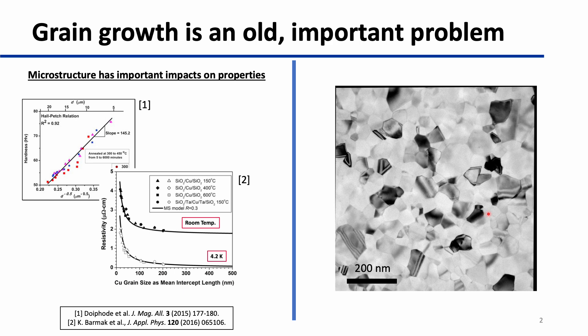Today I'm going to be talking about correlative electron microscopy for in-situ studies of grain growth in thin films. The vast majority of useful engineering materials in the world are polycrystalline in nature, meaning they're made up of many small crystals called grains. The size and shape of these grains — the microstructure of the material — have important impacts on the properties of the material, from mechanical strength to electrical resistivity.